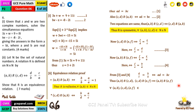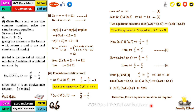Therefore the relation is transitive. Since it is reflexive, symmetric, and transitive, we conclude that R is an equivalence relation. Thank you — make sure you subscribe and watch our videos on pure mathematics, mechanics, and statistics. Ciao.